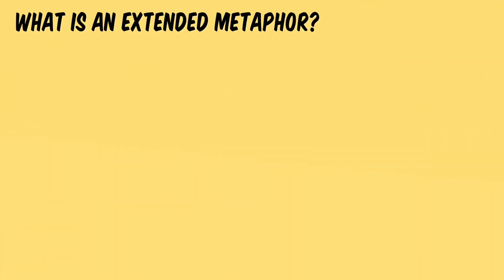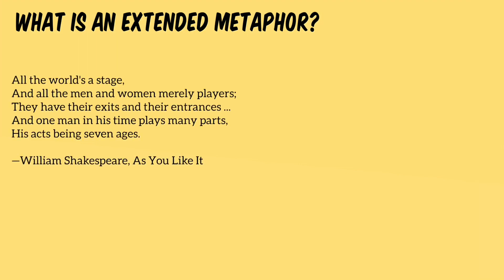Now let's discuss extended metaphors. From Shakespeare's As You Like It: 'All the world's a stage and all the men and women merely players. They have their exits and entrances and one man in his time plays many parts, his acts being seven ages.' Here the metaphor of a stage describes the world. In the next lines, the metaphor continues — men and women are compared to players, with exits and entrances on the stage of the world. Shakespeare uses mini metaphors within the broad metaphor, such as 'players' for people and 'acts' for the seven ages of life.